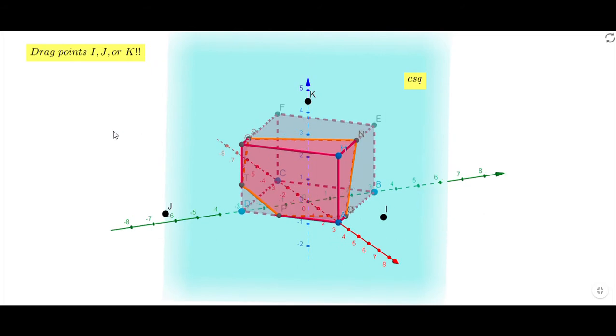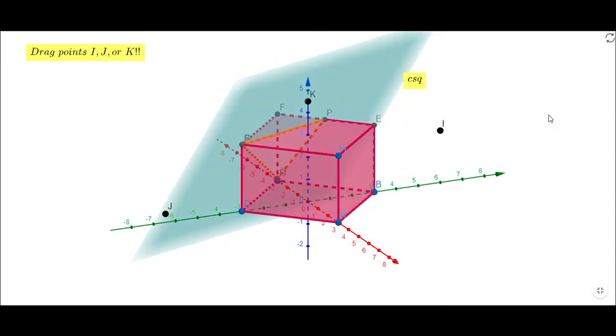I'm going to start with I and drag it. You'll notice the plane changes position, and depending on the position we get different cross sections. Here is a quadrilateral with four sides, that pentagon I mentioned, another quadrilateral - there you go, I can get a triangle if you notice.